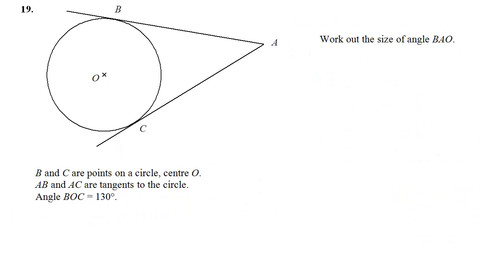Question 19. Work out the size of angle BAO. Well, the information we've got: B and C are points on the circle, AB and AC are tangents. So again, that's a really important bit of information. Angle BOC is 130 degrees. So let's have a look. Angle BAO. Let's just label that on the diagram so we can see what we're talking about. It's that one there. And I'll call it X.